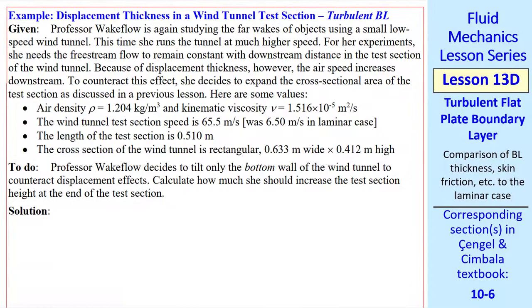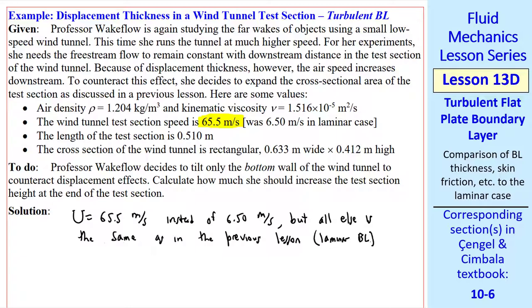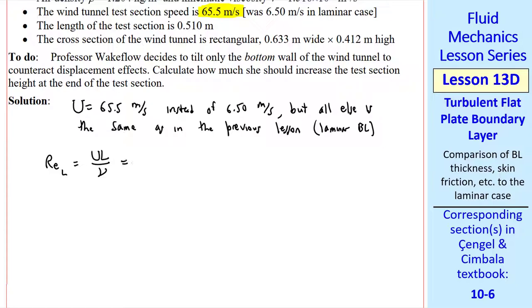I'll do a second example. Also, the same example that we did in the laminar case in a previous lesson, where Professor Wakeflow was studying far wakes in a wind tunnel. But this time, she runs the tunnel at a much higher speed. In the previous lesson, we talked about the displacement thickness effects and how it makes the airspeed increase downstream. And so she expands the cross-sectional area of the test section. I used the same air properties as previously, and the dimensions of the test section are the same as before. But we'll run at a higher speed, little more than a factor of 10. 65.5 meters per second instead of 6.5 meters per second in the laminar case. But all else is the same as in the previous lesson, which was for a laminar boundary layer. Here we'll have a turbulent boundary layer. I calculate the Reynolds number at the end of the test section, which is about 2.2 million. So this is turbulent.